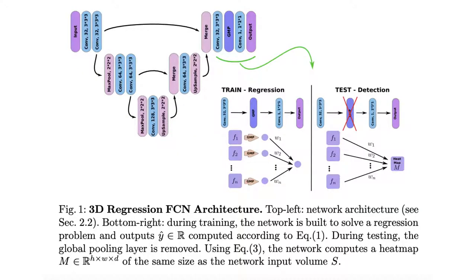We propose a novel convolutional neural network for lesion detection from weak labels. Only a single global label per image — the lesion count — is needed for training. We train a regression network with a fully convolutional architecture combined with a global pooling layer to aggregate the 3D output into a scalar indicating the lesion count.